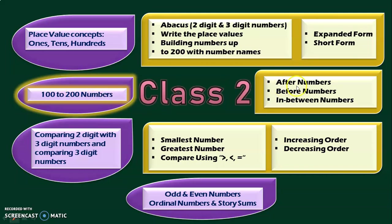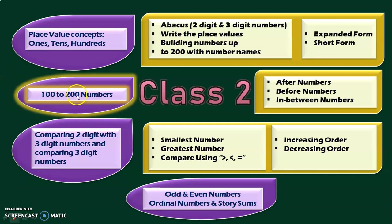We will be looking at after numbers, before numbers, and in between numbers. In class 2, we will be dealing with 3-digit numbers, but they are split into two phases. In the first phase, we will be dealing with 100 to 200 numbers, and in the second phase, also in class 2, we will be dealing with numbers from 200 to 1000.